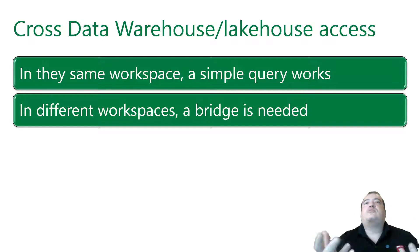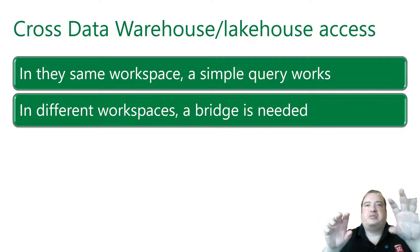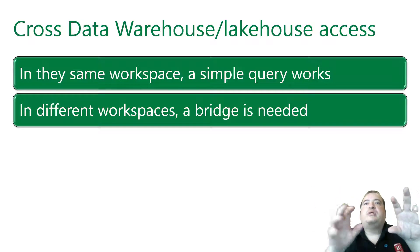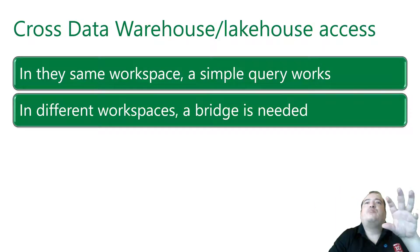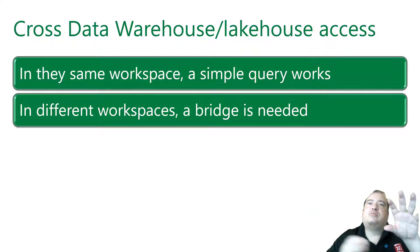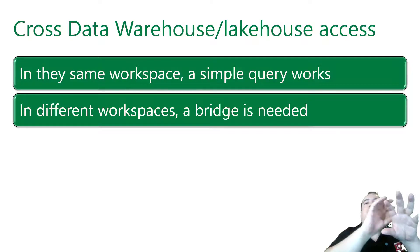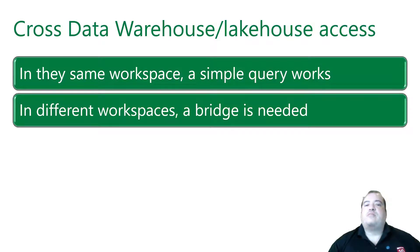So what could we do when they are in different workspaces — Workspace A and Workspace B? We create a lake house as a bridge. We make shortcuts between the lake houses, and then the data warehouse can access the lake house through it. That's what we call a bridge.